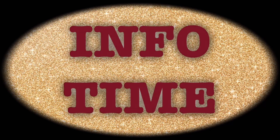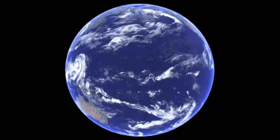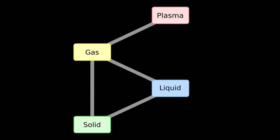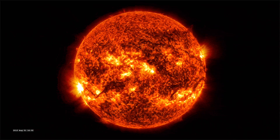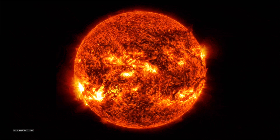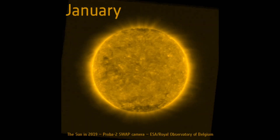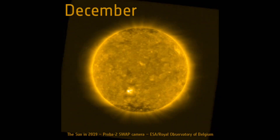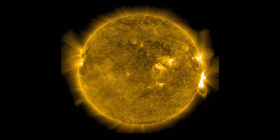Welcome to our channel InfoTime. Just as the Earth rotates on its own axis, the sun also rotates by itself. Even though the sun is not solid like the Earth, it still has rotation as plasma swirls around its surface. On average, it takes 27 Earth days for the sun to rotate once on its axis, but different parts move at different speeds — the equatorial region takes just 24 days, while the polar regions take more than 30 days.